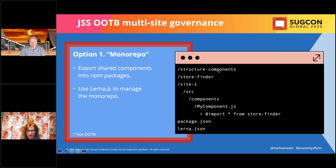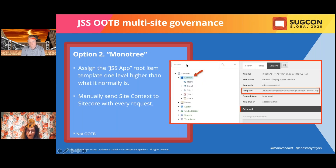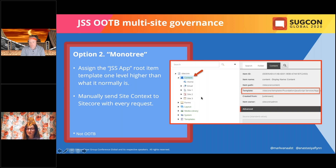The second approach is the 'mono-tree': reassigning the JSS app root item template one level higher than normal — at above-site level — so all sites underneath can be managed by one codebase. The required customization is manually sending back the site context with every request, since the layout service wouldn't know which site to serve out of the box.